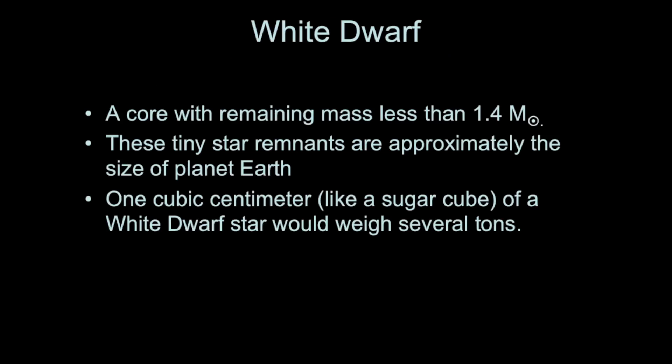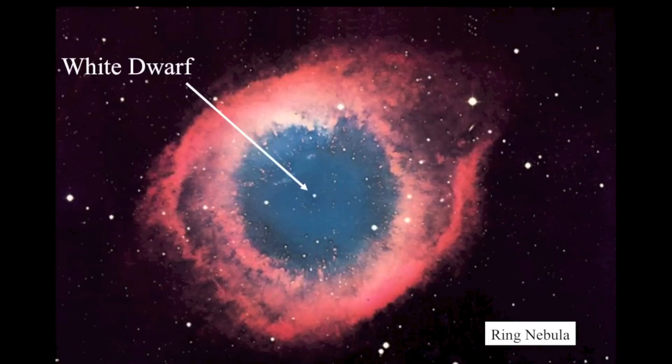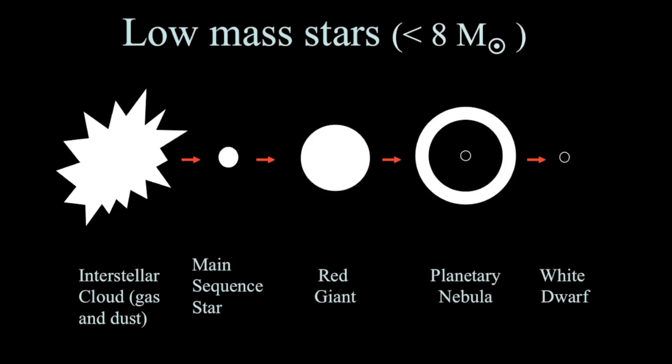A white dwarf has a maximum mass of about 1.4 solar masses — it cannot be more massive than that, or gravity will crush the material down further. The approximate size of a white dwarf is about the size of Earth, but it has an extremely high density. A cubic centimeter — about the size of a sugar cube — of white dwarf material would weigh several tons. The white dwarf is this small carbon-oxygen core, bright enough to be seen with some telescopes.